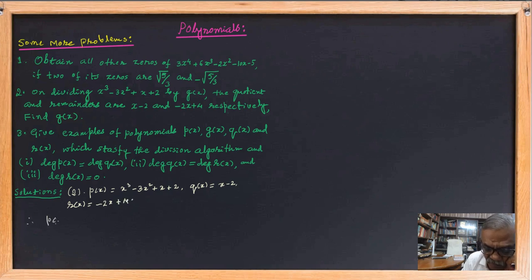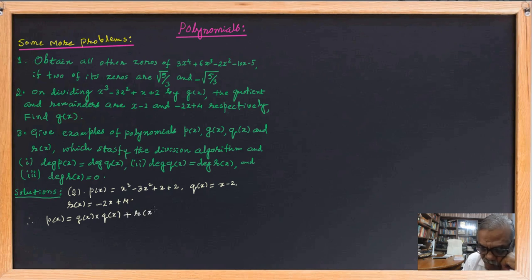By the division algorithm we know that p(x) is equal to g(x) into q(x) plus r(x).